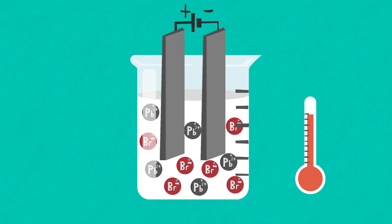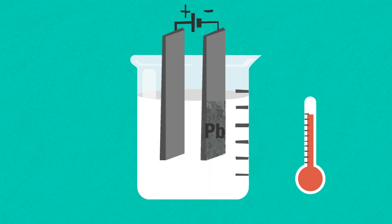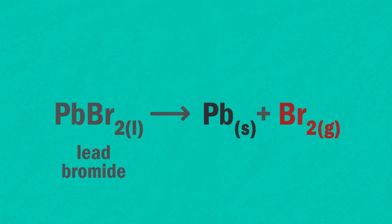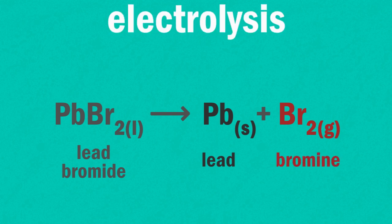Now, if you were to do this in a laboratory, you'd see silvery lead forming on the cathode and a brown gas being given off at the anode. This is bromine. The lead bromide has been decomposed into lead and bromine by electrolysis.